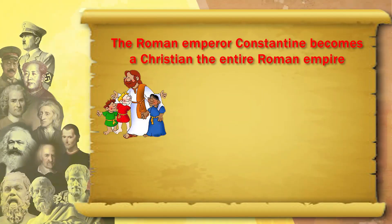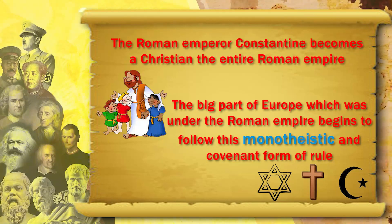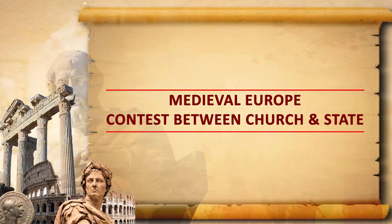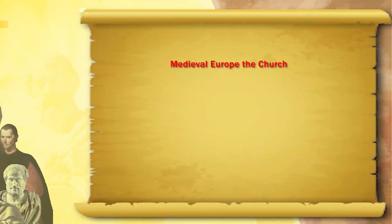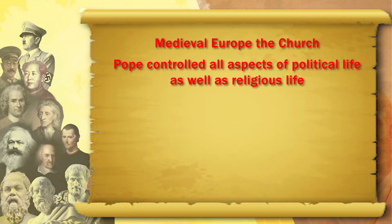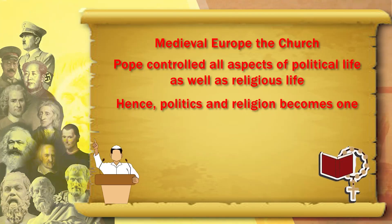When the Roman Emperor Constantine becomes Christian, the entire Roman Empire and a big part of Europe begins to follow this monotheistic, covenant form of rule. The role of the church becomes very, very important. In medieval Europe, the church and the Pope control all aspects of political life as well as religious life — hence politics and religion become one.